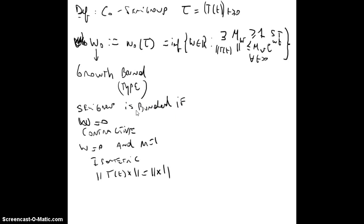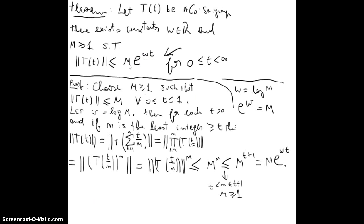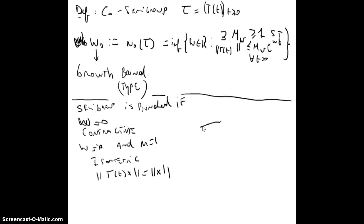Just to clarify: when we said that a semigroup is bounded, if beta is equal to 0, all these conditions that we're given are for the omega and the M of this theorem. If we have a C0 semigroup, then the norm of T(t) is bounded by this. That's where these conditions come from.